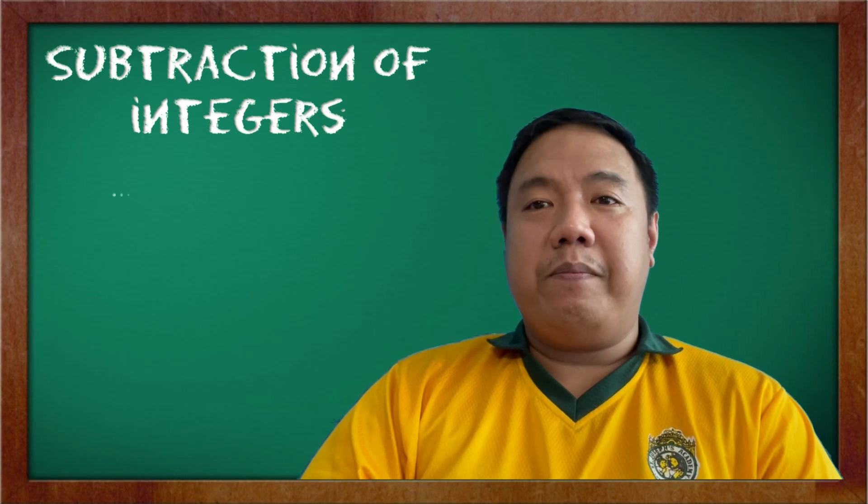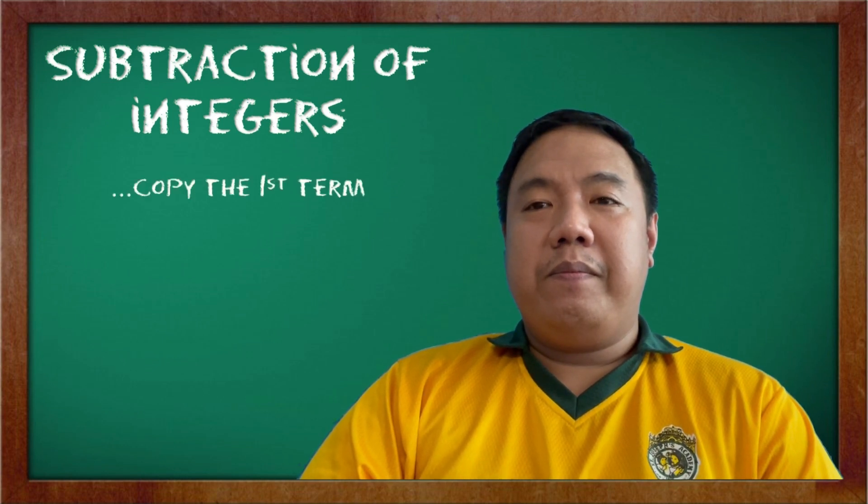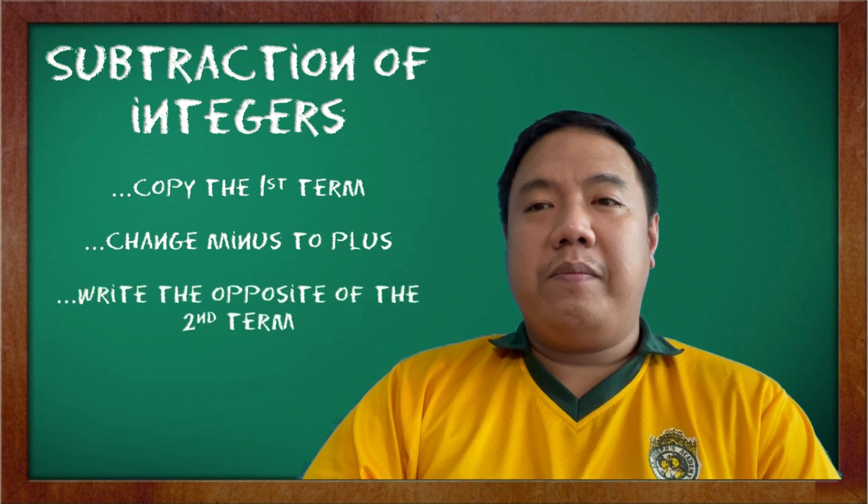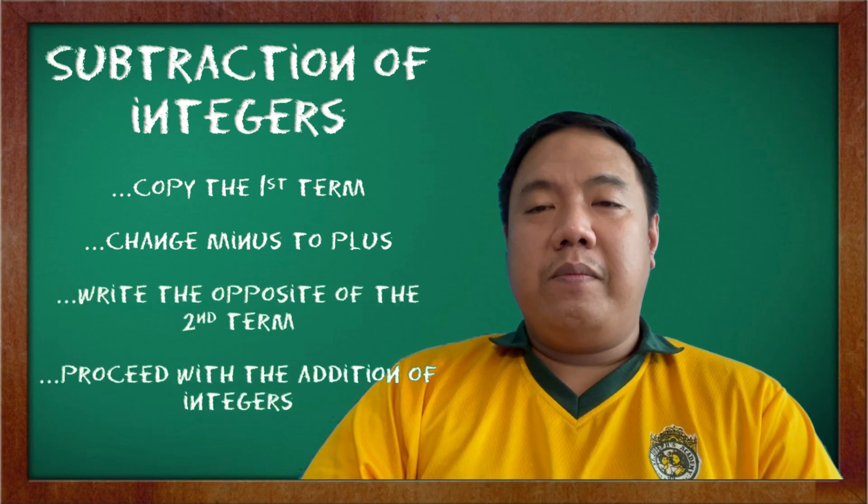For us to proceed with our subtraction of integers, we are going to need what we have learned with our addition of integers. So please remember the addition of integers. For the subtraction of integers: copy the first term, change minus to plus, write the opposite of the second term, and proceed with the addition of integers.